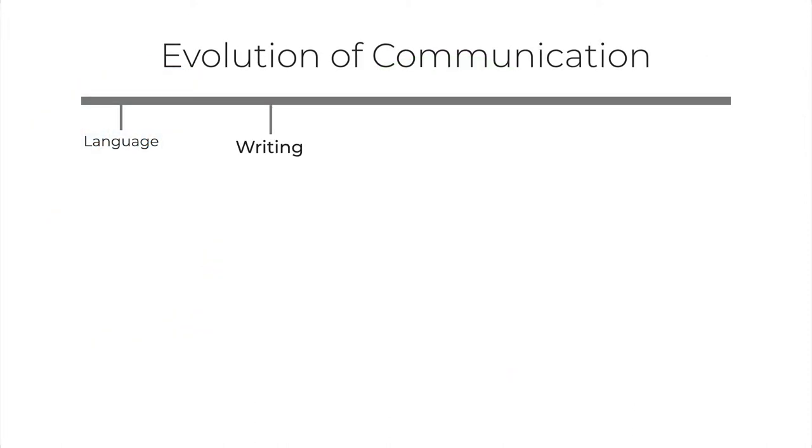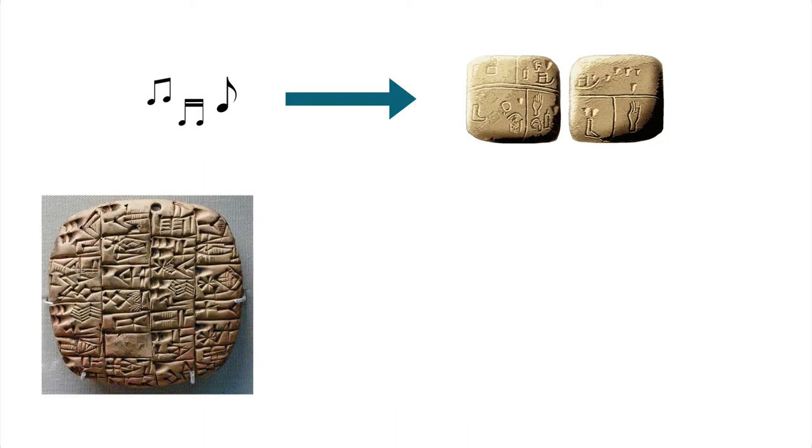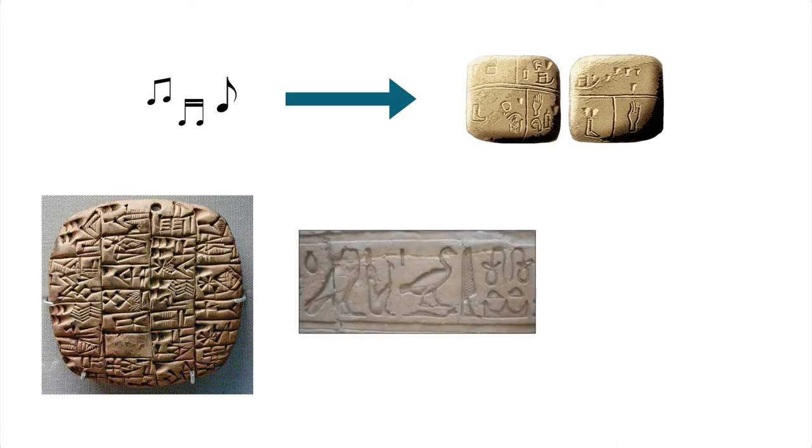The second main development in the evolution of communication is writing. Writing is encoding sounds into signs and symbols so that language can be read. Pictograms were the first form of writing. Pictograms are symbols that are used to depict information or an idea. Around 4000 BC, Sumerians used cuneiform—wedge-shaped marks on clay—to record trade-related transactions. Egyptian hieroglyphs are another example of pictograms.